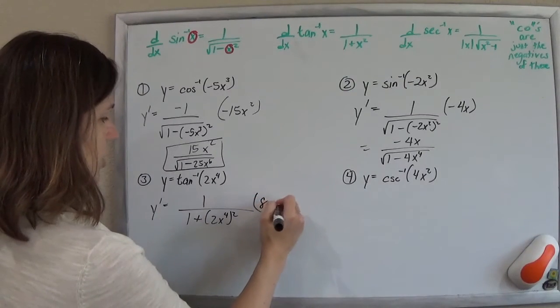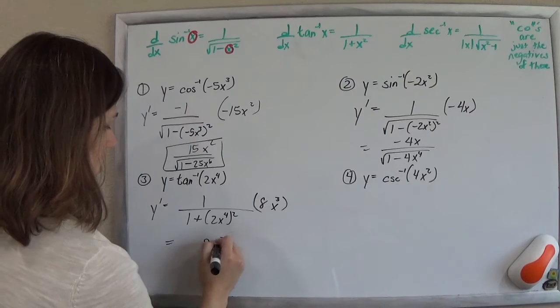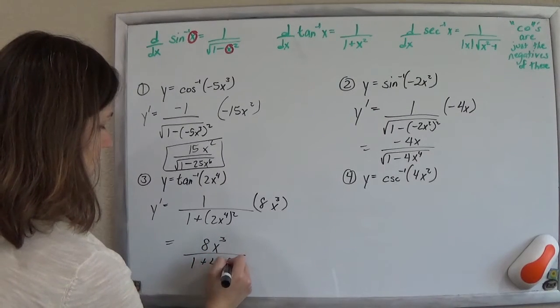We do it again. And then just clean that up. 8x cubed over 1 plus 4x to the eighth.